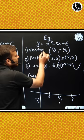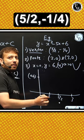Let's take an example. Suppose the equation is x squared minus 5x plus 6, so its vertex is 5 by 2 comma minus 1 by 4. Roots are 2 comma 0 and 3 comma 0.